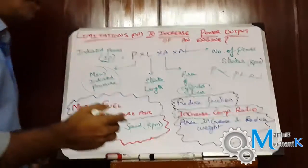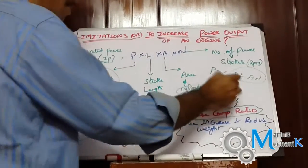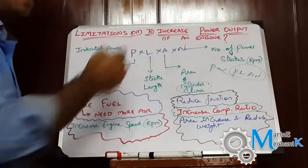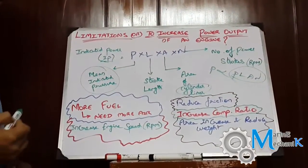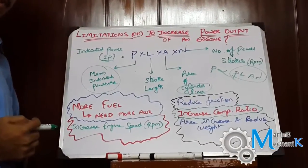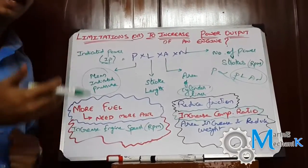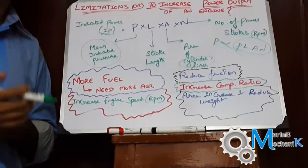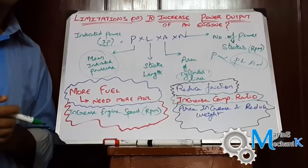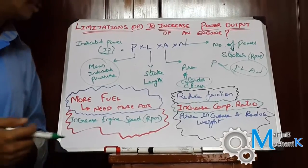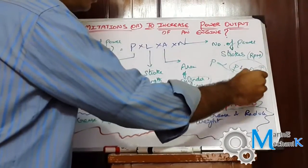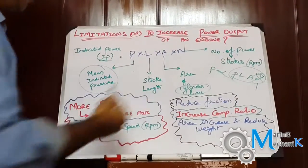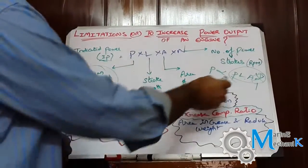By increasing any one of these factors, I can increase power. If I increase the speed (RPM) of the engine, power output will increase. However, for a marine diesel engine the maximum RPM is fixed by design — we can't extend beyond that. So N is not a factor we can alter.